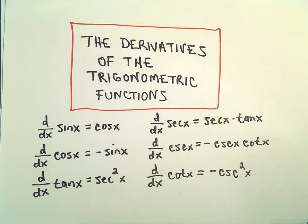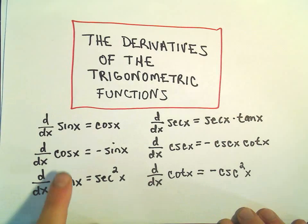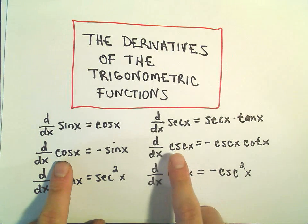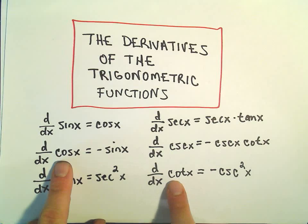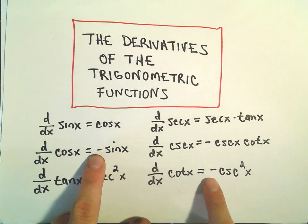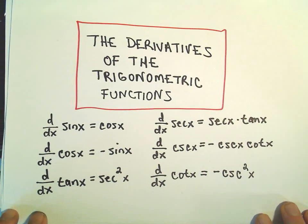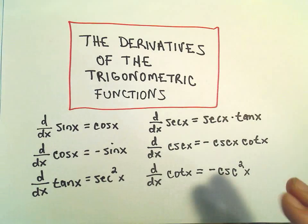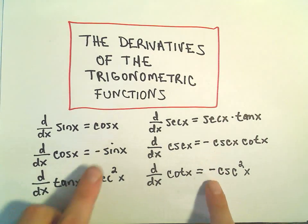But one thing I remember to help me: notice the derivative of cosine and cosecant and cotangent, all of those have the minus sign associated with them. So the derivative of the co-functions have the negative associated.